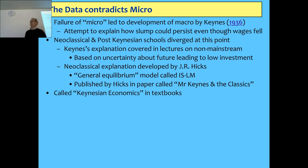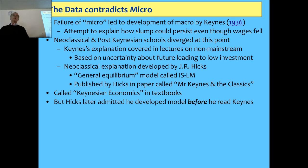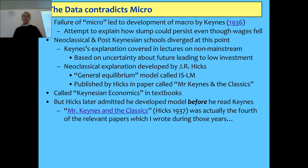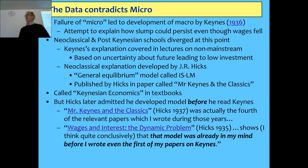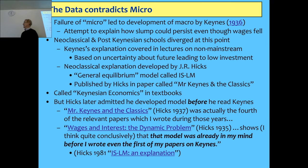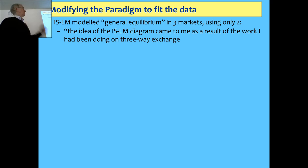Hicks basically labelled his 1937 paper as a book review of Keynes and called it Keynesian economics. But writing in 1979–80, he said the model was already in his mind before he read even his first paper on Keynes. So what he described as a Keynesian model was actually a neoclassical one — most economists don't realise that. There's a link to the paper where he admits this is not a model of Keynes, it's a neoclassical model.